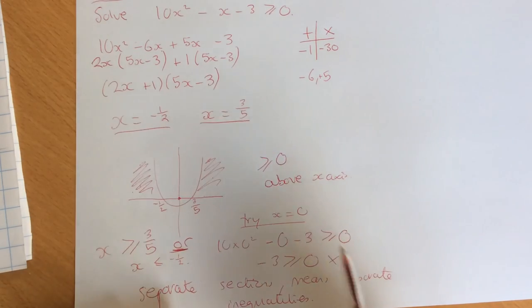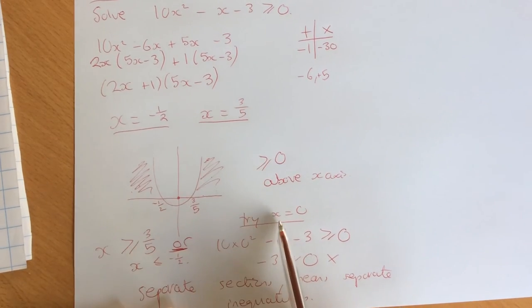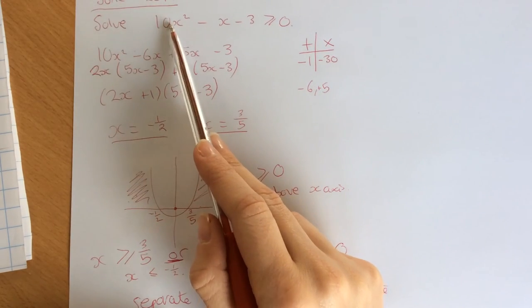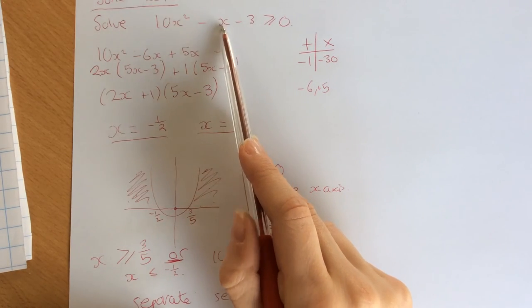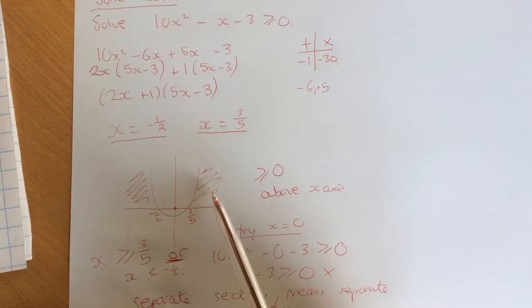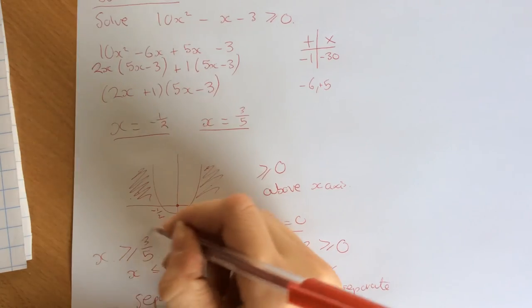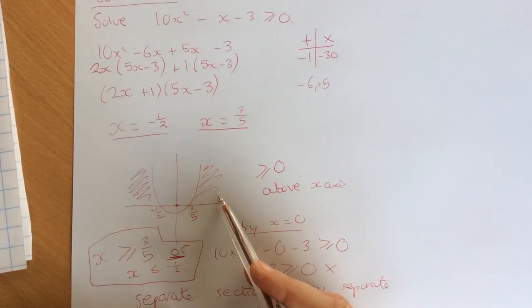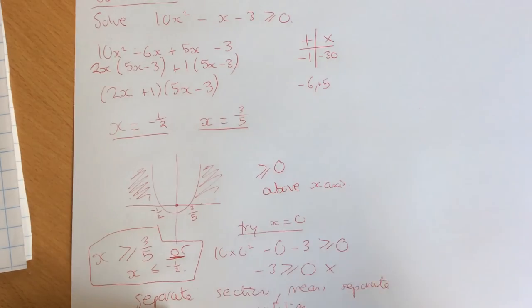And if you just want to check this area, you could try another one. You could try, for example, x is 1, which gives us 10. Take away 1 is 9, take away 3 is 6, which is greater than 0, so we know that that works. So our final answers are these two: x is greater than or equal to 3 fifths, or x is less than or equal to minus a half.